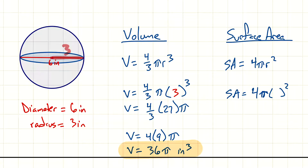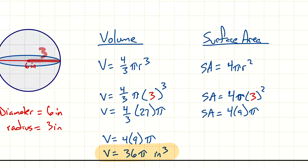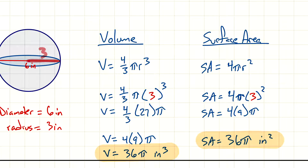Plugging in three again, surface area equals four times three squared, which is four times nine pi. Surface area equals 36 pi — but notice the units are inches squared. Did we get the same answer as volume? You might think yes, but no — volume was 36 pi inches cubed and this is 36 pi inches squared. Those are two different types of units.